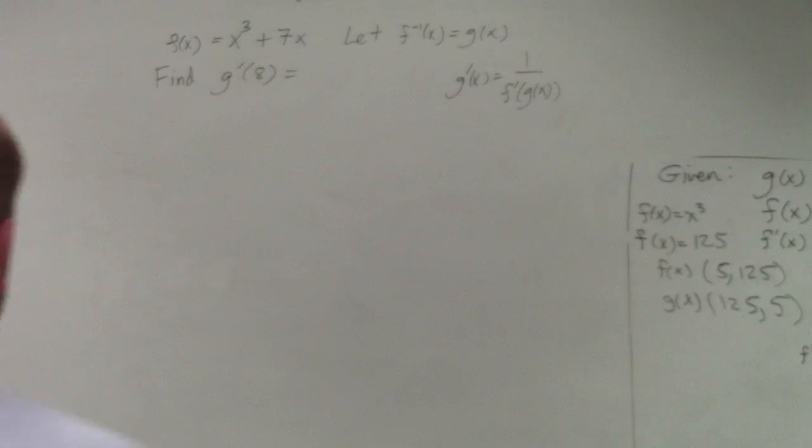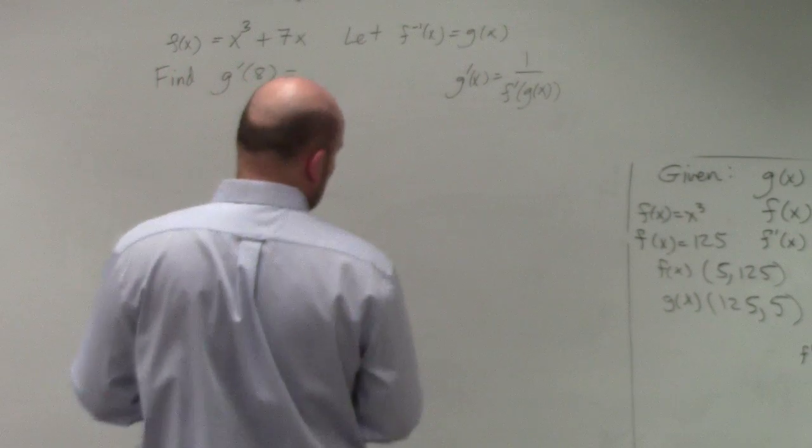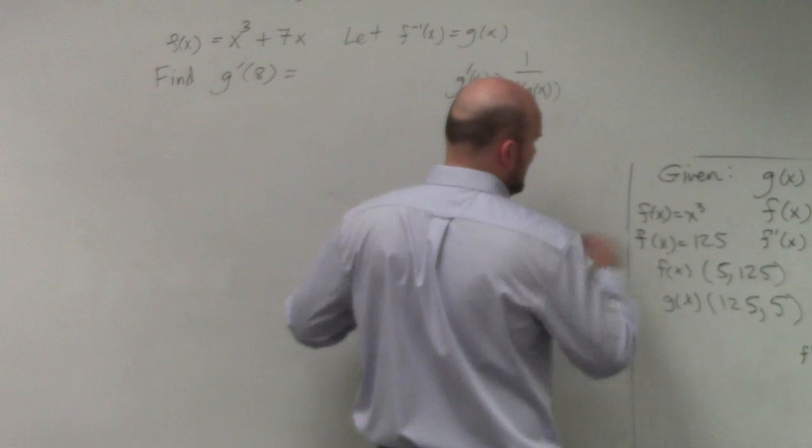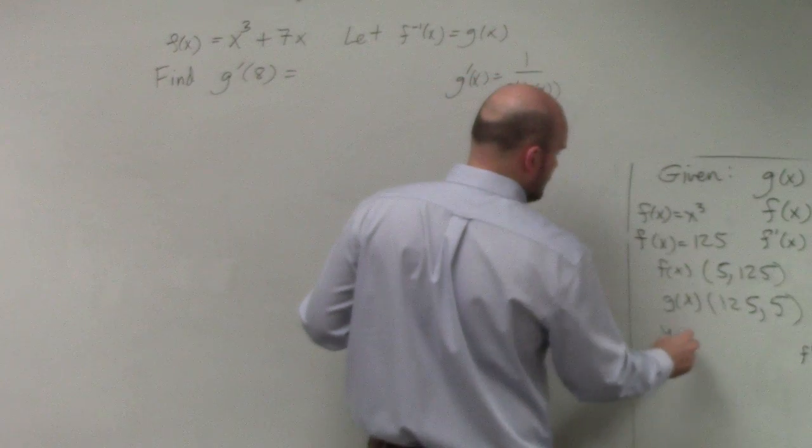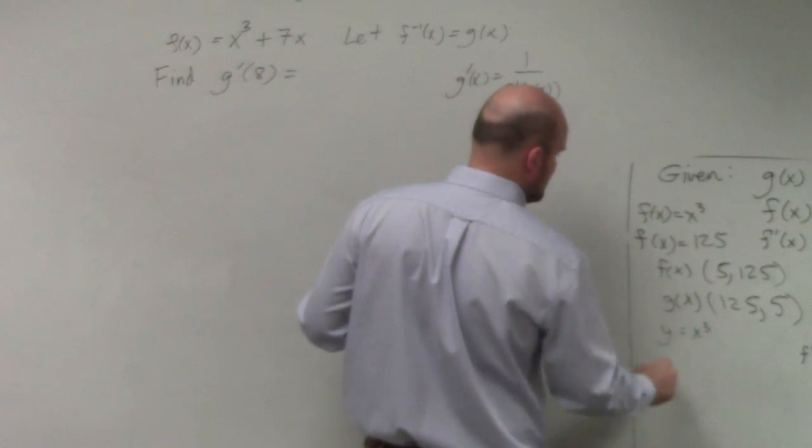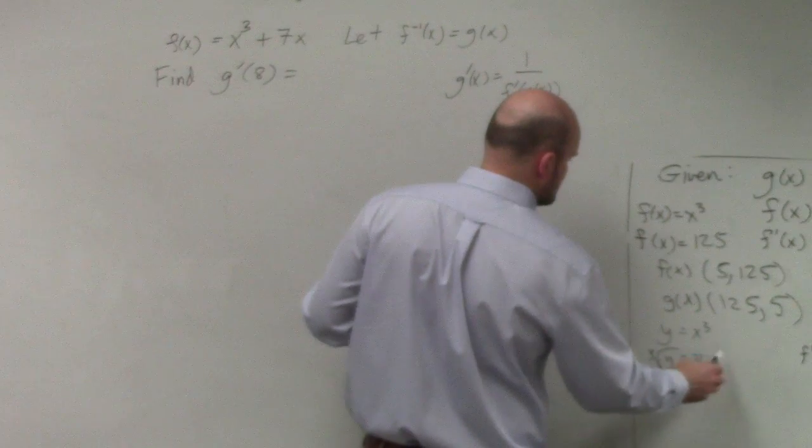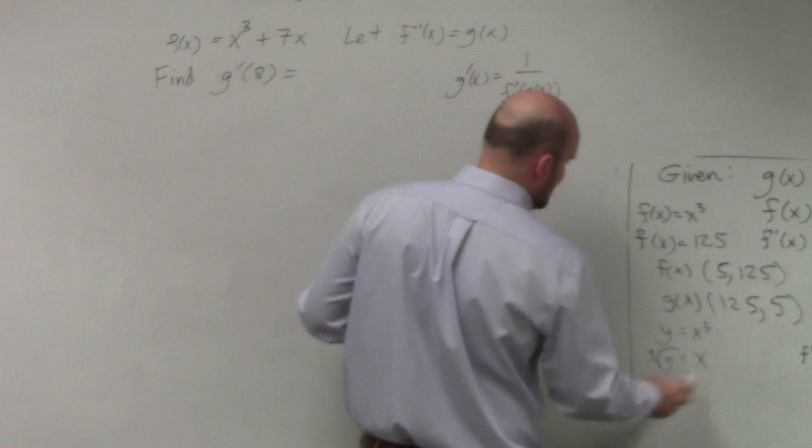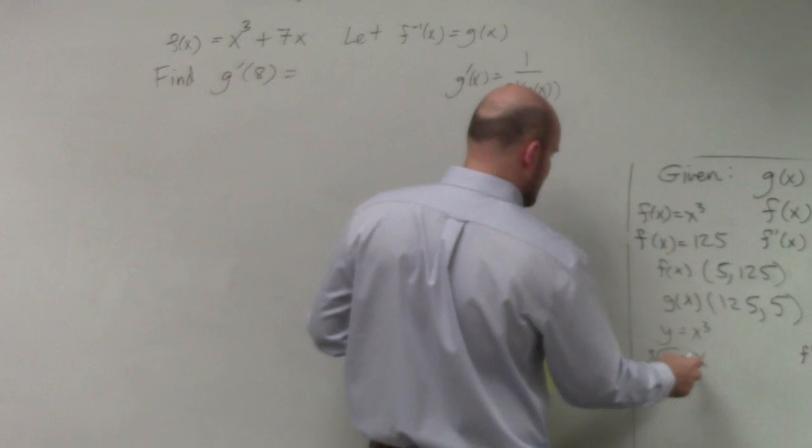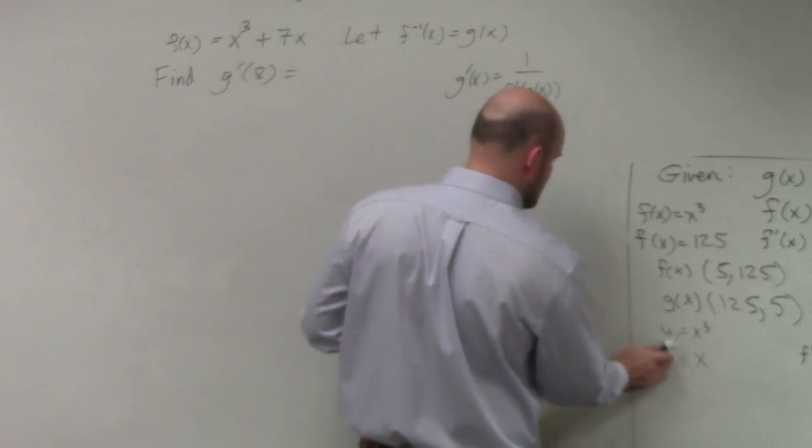This one, but there comes a problem. I don't know why I didn't do it over here, but you could have found the inverse if you had done y = x³, cube root both sides, equals x. And oops, I need to swap the x and y's.